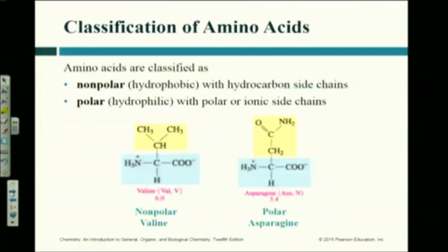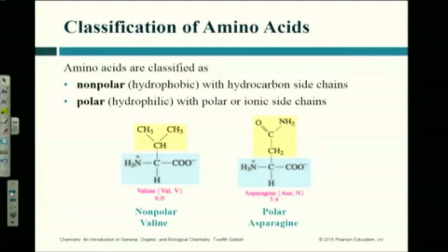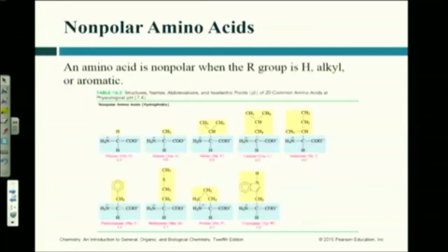Let's look at two examples: valine and asparagine. The central carbon shown in blue has an NH3 — an ammonium or amine group — on it, and also a COO minus, which is the carboxylic acid. All amino acids have that. What's different is the R group — shown in yellow. You'll hear people refer to amino acids as nonpolar or polar, based upon what that R group is. The one on the left is a nonpolar group; the one on the right has an amine group and is polar. That's one of the ways you can classify amino acids.